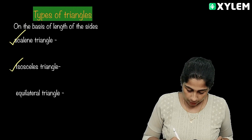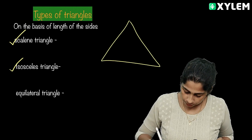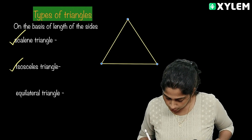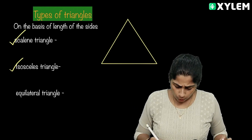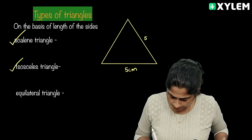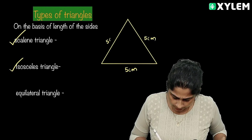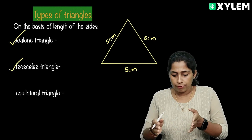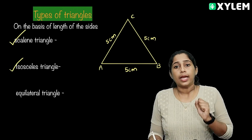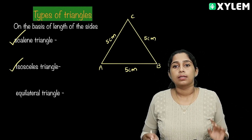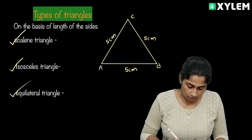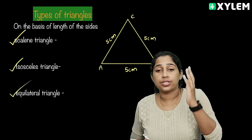This triangle is called an Isosceles Triangle. Now another triangle — all three sides are 5 cm each: A, B, C. All three sides are equal, so we can call it an Equilateral Triangle.